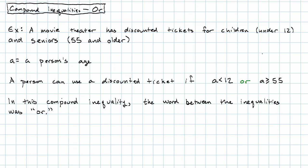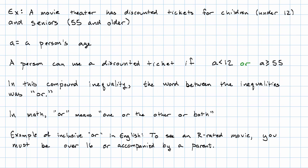This is a use of the word OR that we see in English sometimes. For example, in order to see an R-rated movie, you must be over 16 OR accompanied by a parent. If you're 30 and you go to an R-rated movie with your mom, you're still going to be let in. Right? They're not going to say, oh, I'm sorry, it's OR accompanied by a parent. No. This is an inclusive OR.